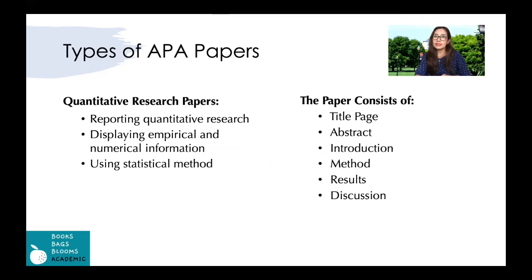These are the types of papers that students usually submit for their assignments. First, quantitative research papers, where you report quantitative research displaying empirical or numerical statistical information — usually in numbers and using statistical methods. This paper consists of a title page, abstract, introduction, method, results, and discussion.